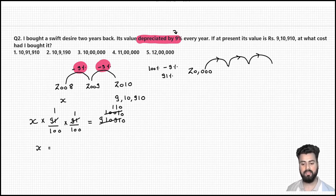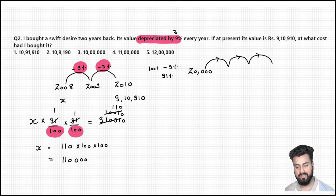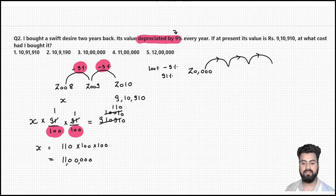Solving: 91 × 91 equals 8,281, so x × (8,281/10,000) equals 9,10,910. Taking the denominators to the other side gives x equals 9,10,910 × (100/91) × (100/91). After cancellation the numerator simplifies to 110, and multiplying by the two hundreds gives five zeros — meaning the answer is 11 lakh. So mark the option which says 11 lakh. Option 4 is the correct answer.